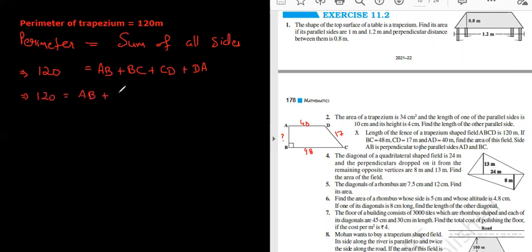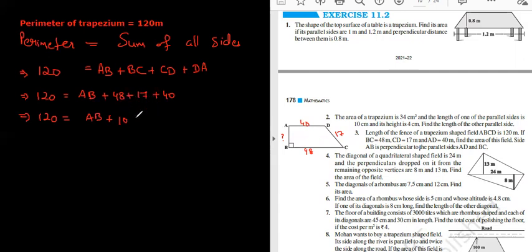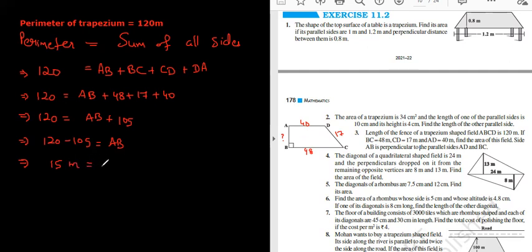BC is 48, CD is 17, and AD is 40. So 40 + 40 is 80, 80 + 10 is 90, 90 + 8 is 98... 100 and 5 — yes, 105. If I shift it to the other side, 120 minus 105 equals AB. So AB equals 15 meters.